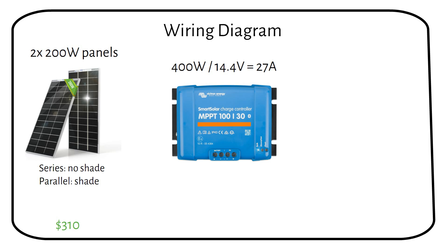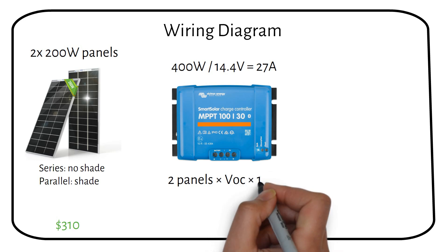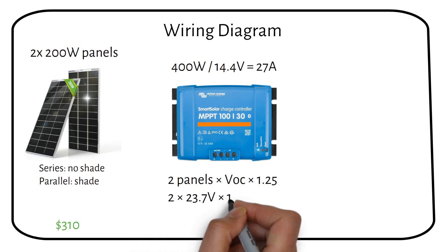Next, let's calculate the maximum input voltage. Since the panels are wired in series, the voltage adds up. The formula is 2 panels times the VOC of the panel times a safety factor of 1.25 and we get 60 volts.